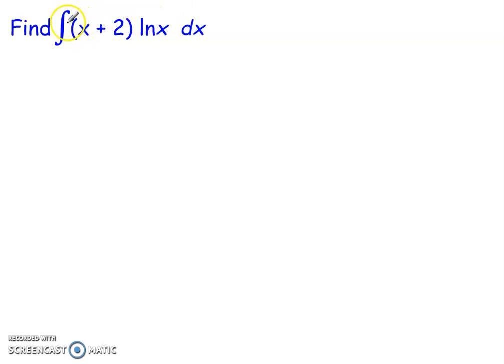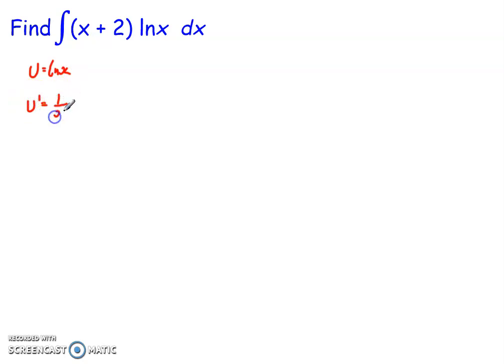So the first one — I want to find the integral of (x + 2) times ln(x) dx. We've got to pick our u and our v-dashed. Now we always want to find a function that reduces itself down to a constant and differentiates as quickly as possible. If we set ln(x) equal to the derivative, we'd find that integrating ln(x) is something we can't do. So we have to set u equal to ln(x), which gives u-dashed equal to 1/x, and we set v-dashed equal to (x + 2), giving v equals x²/2 + 2x.